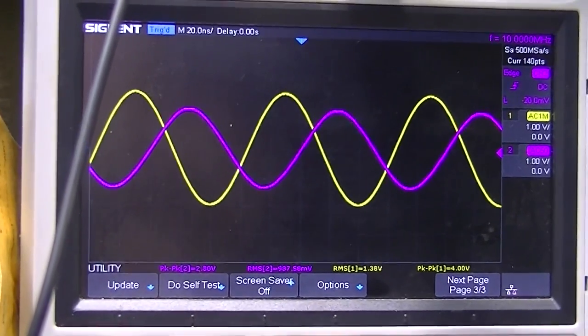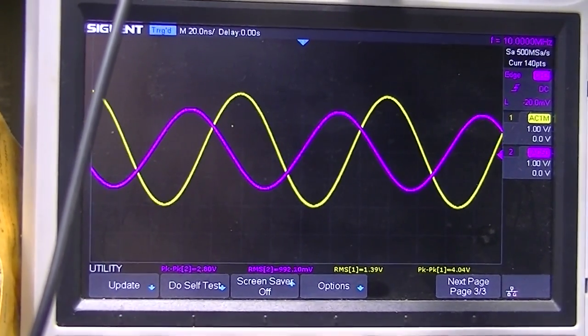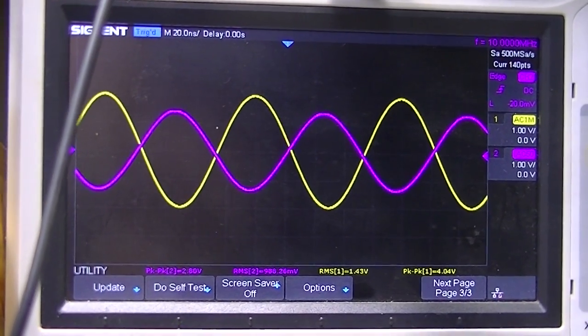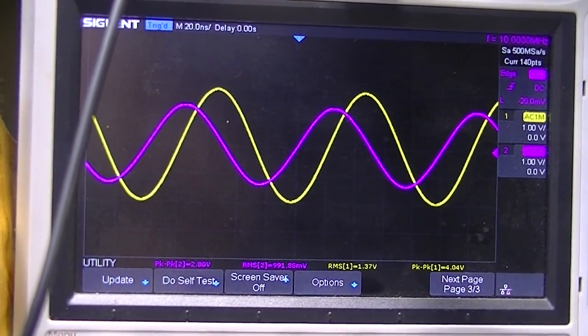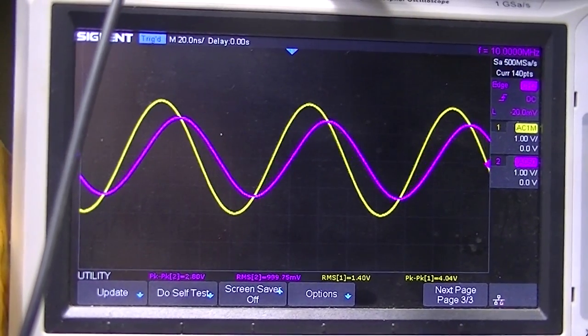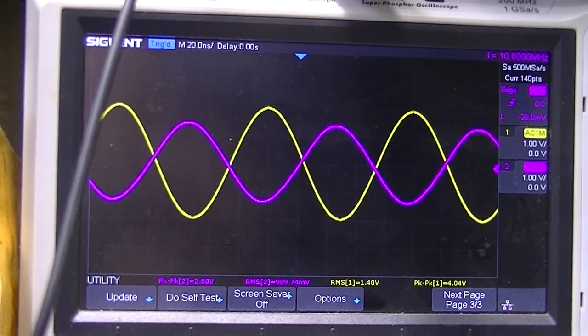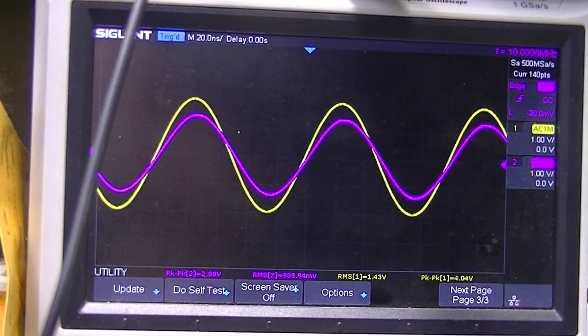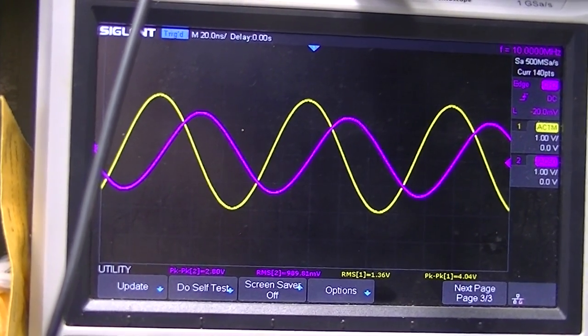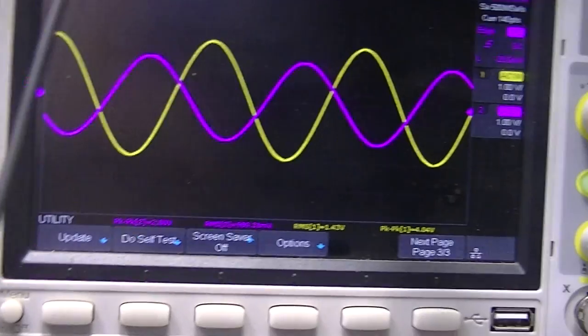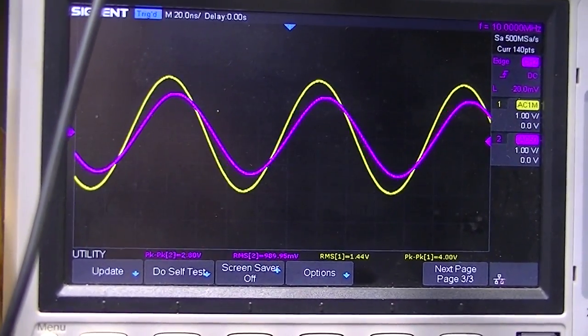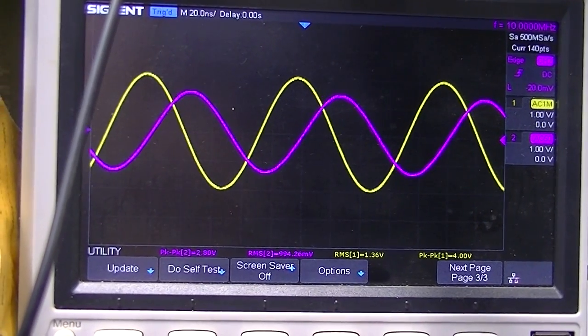Now I do have to say that the QRP Labs GPS disciplined oscillator offers a TCXO option, which I did not elect to do. So I'm hoping that the yellow signal is the one that's more accurate.